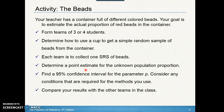The teacher has a container full of colored beads, but you don't know the actual proportion of red beads in the container. We're using this experiment to see if we can figure out what the actual proportion of red beads is. After you do this, you're going to find a 95% confidence interval for the parameter P — the population proportion of red beads — considering any conditions required for the methods you use, and then compare your results with the other teams in the class.